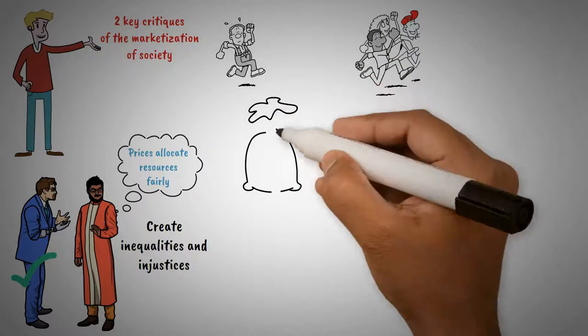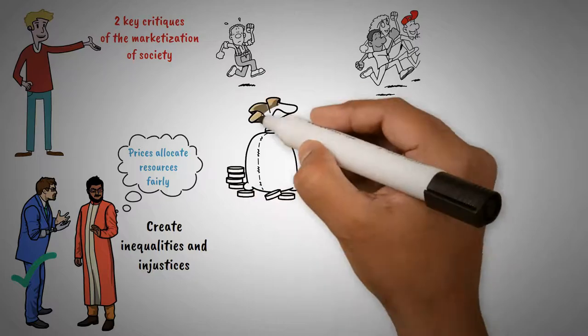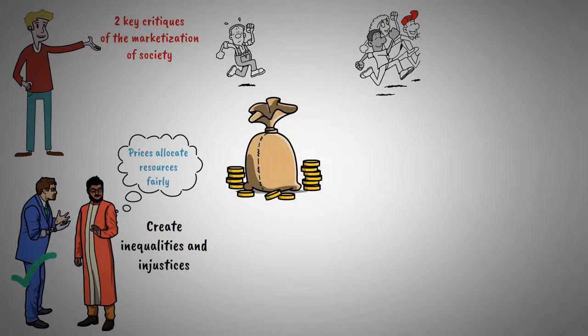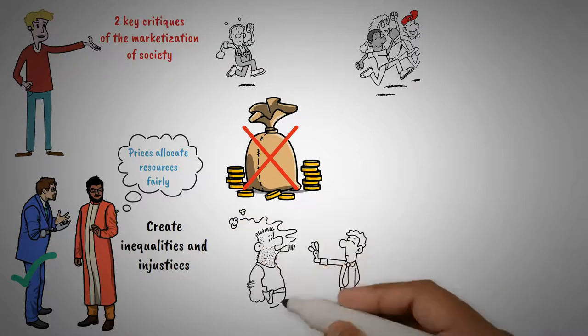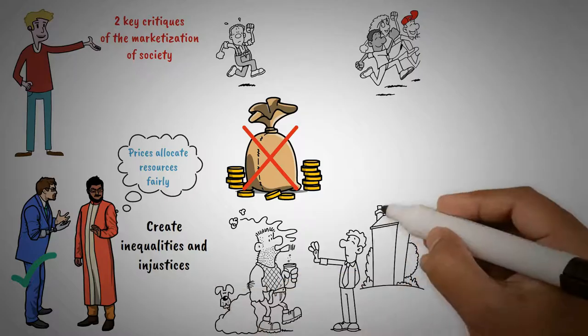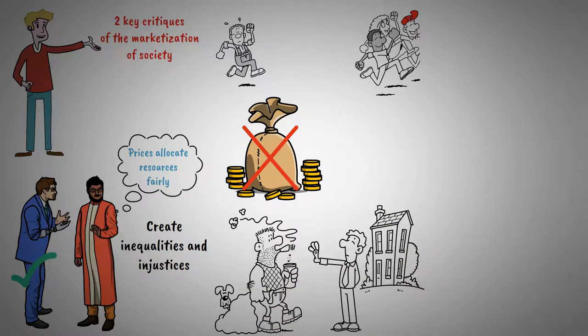Simply because someone is willing to pay a high price for a good doesn't necessarily mean they need or value it more than someone else. This leads to a situation where those with substantial means can acquire things they don't necessarily need, while others are deprived of essential resources like food, shelter, or health care.